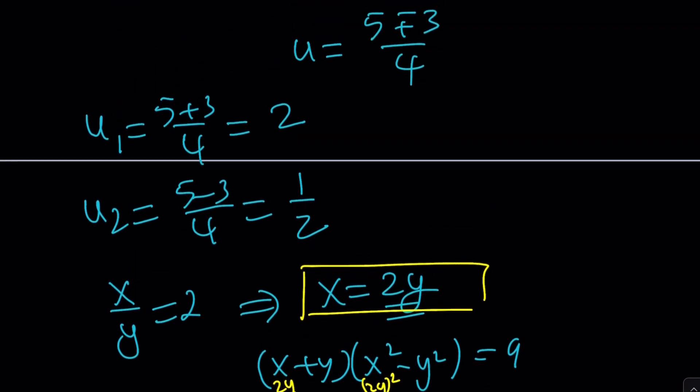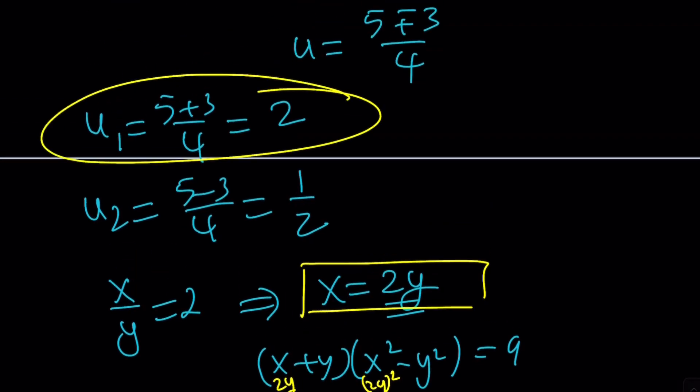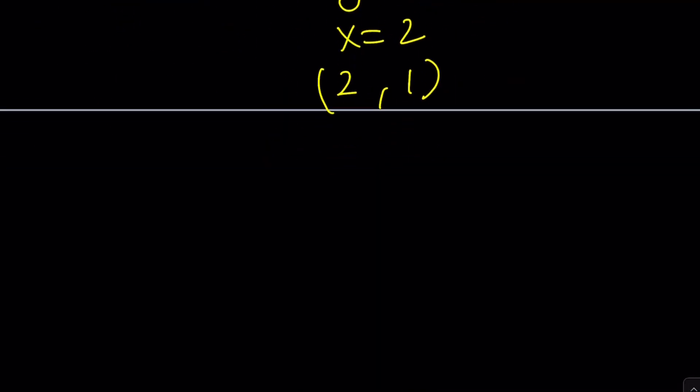Let's go and take a look at the other u value. One of them was 2. The other one is 1 half. So, x over y equals 1 half gives us y is 2x. You can also write it as x is half of y. But I like this better. I don't want to deal with fractions. Right? We're done with fractions. Okay. Hopefully. Y equals 2x.